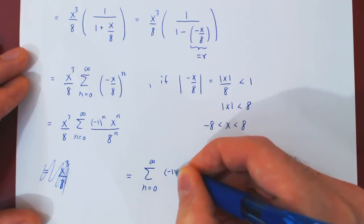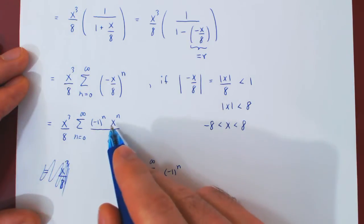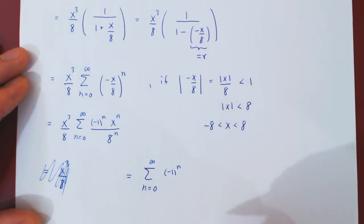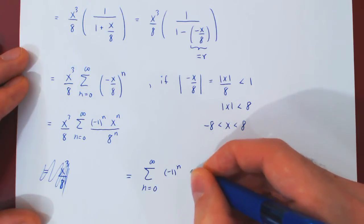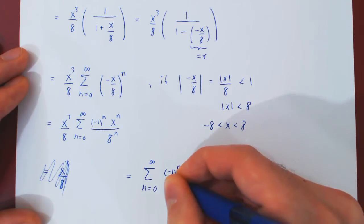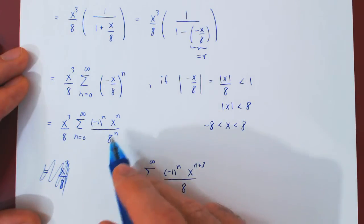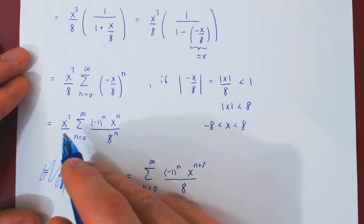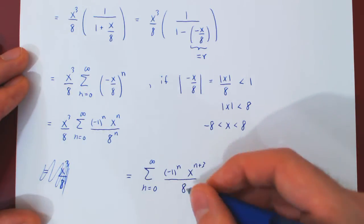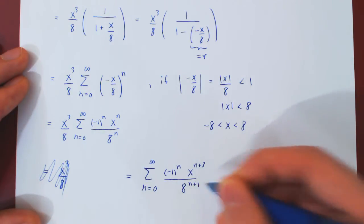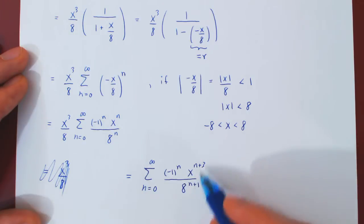So negative 1 to the n stays there. x cubed times x to the n, we can add the exponents, which gives us x to the n plus 3. Same for the 8. 8 to the n times 8, 8 being 8 to the 1, so it gives us 8 to the n plus 1. So there we have it, the Maclaurin series.